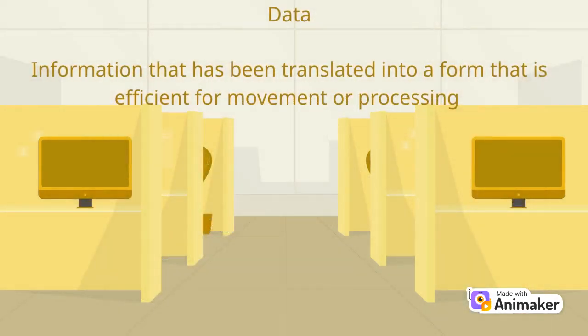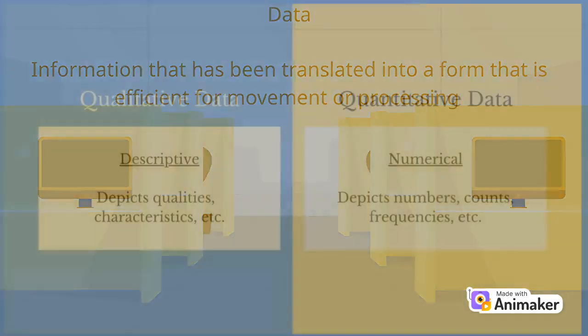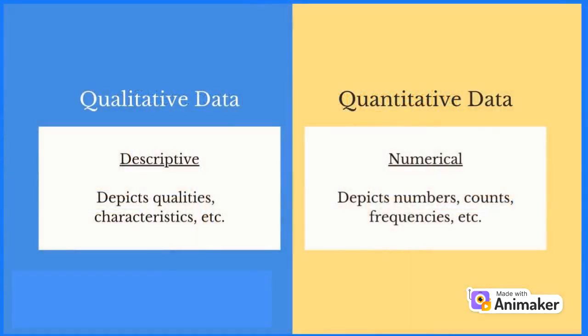Data is information that has been translated into a form that is efficient for movement or processing. First, let's know the main two types of data.